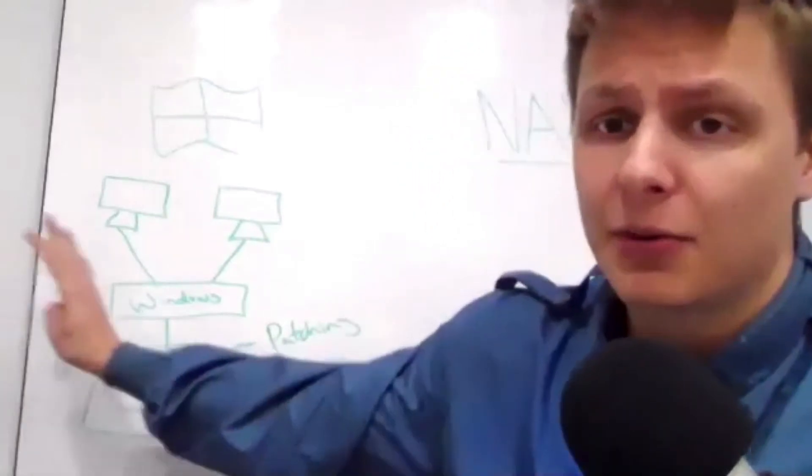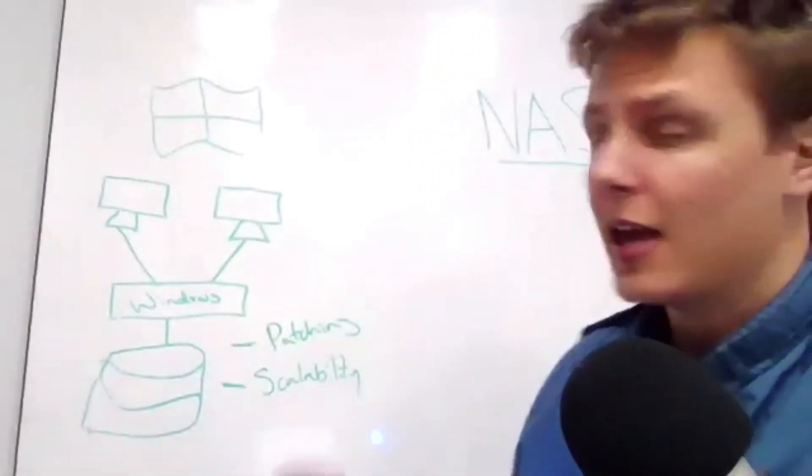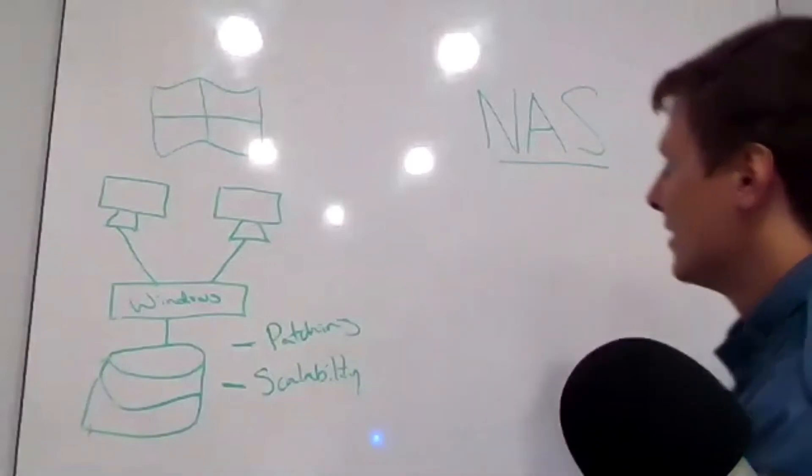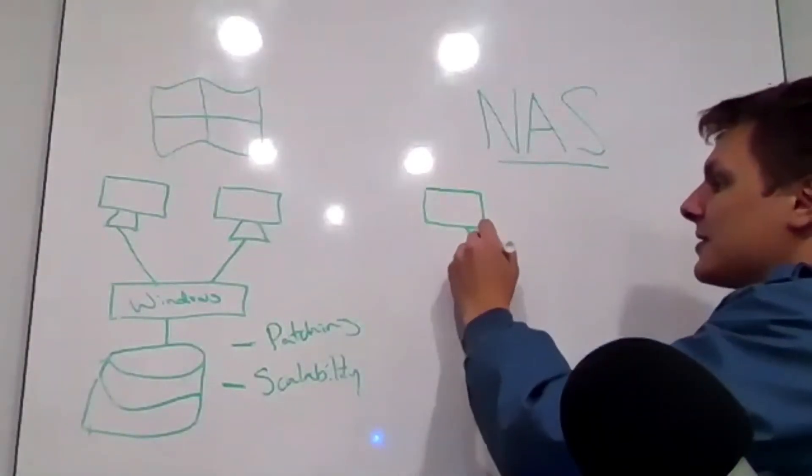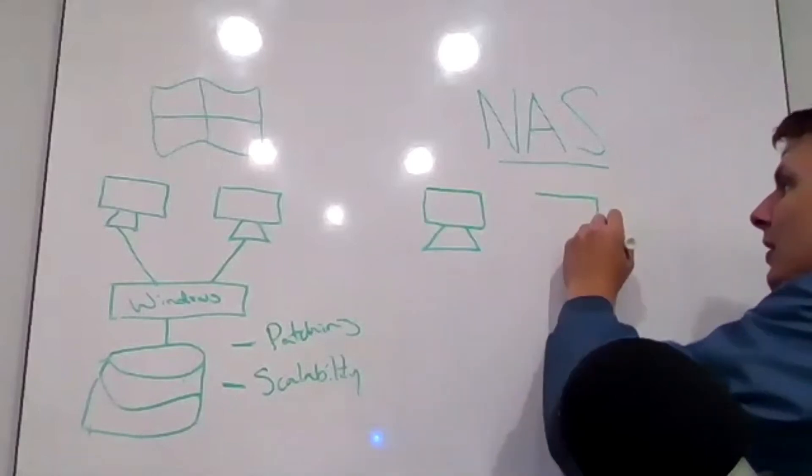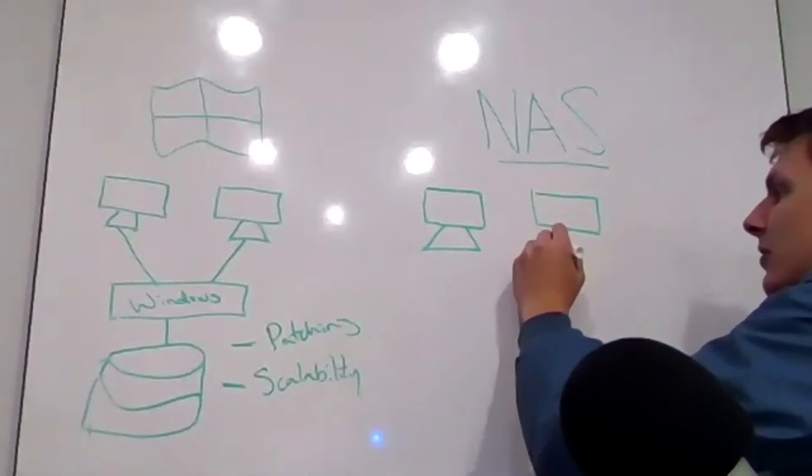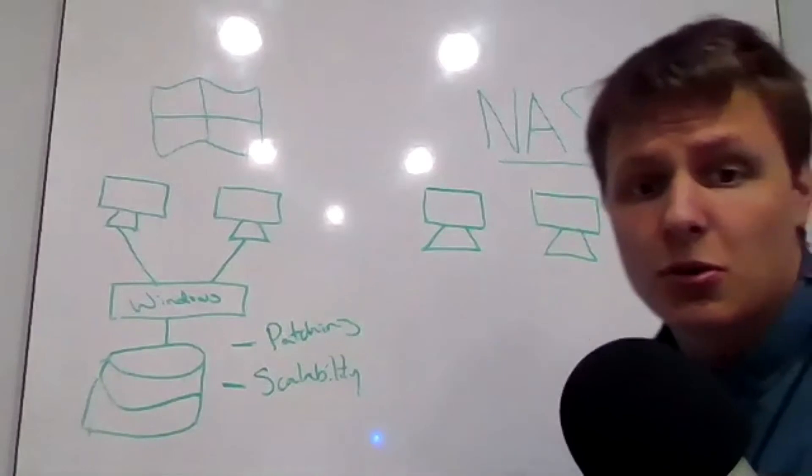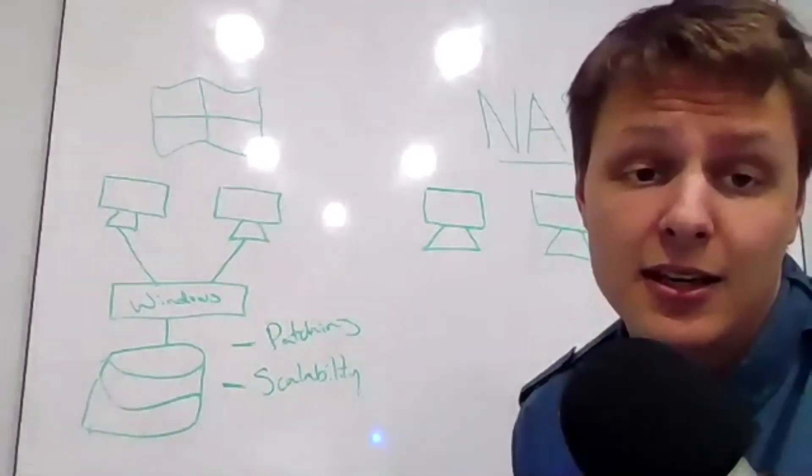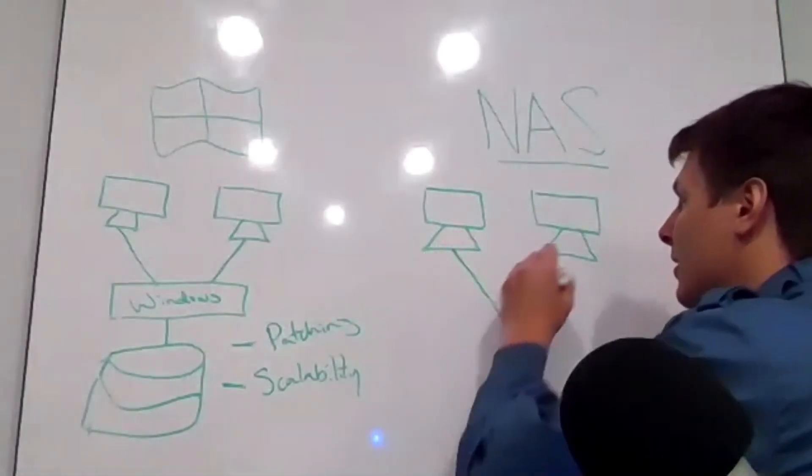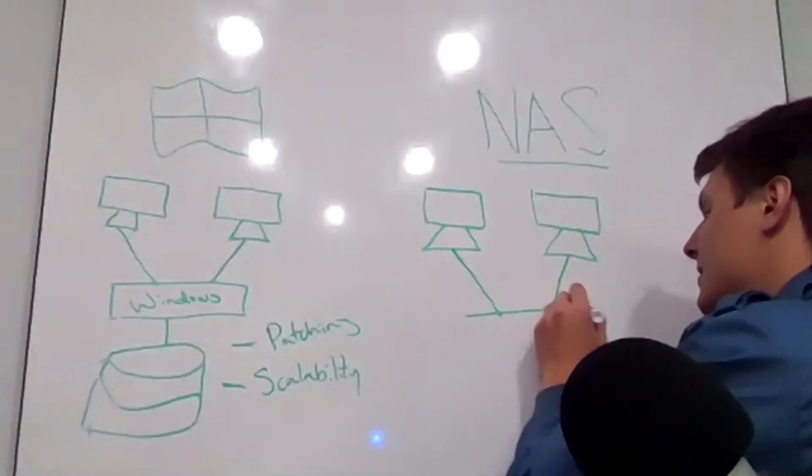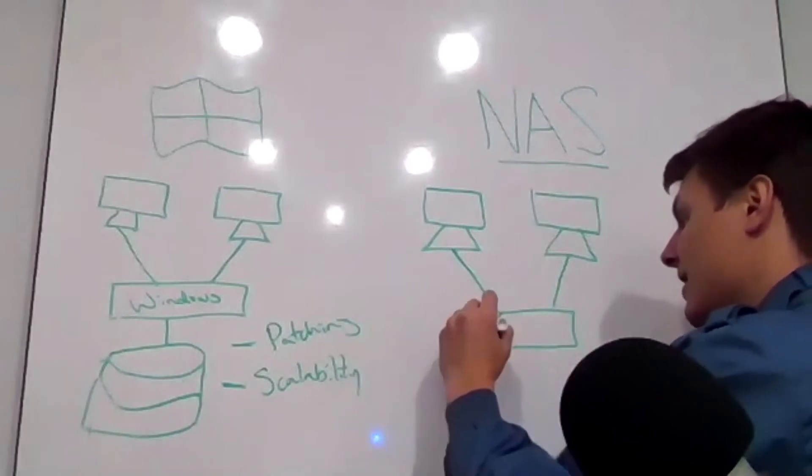So over here we've got your Windows server, and over here we have NAS. NAS is going to look like this: you have your clients—it could be individual PCs or they could be servers—and they're going to connect to your NAS.